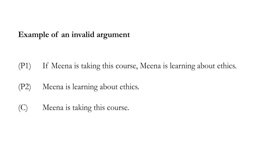Here's an example of an invalid argument. Premise one: if Mina is taking this course, Mina is learning about ethics. Premise two: Mina is learning about ethics. Conclusion: Mina is taking this course. That's not a valid argument because it's possible for the premises to be true and the conclusion false. It's true that if Mina is taking this course, she's learning about ethics.